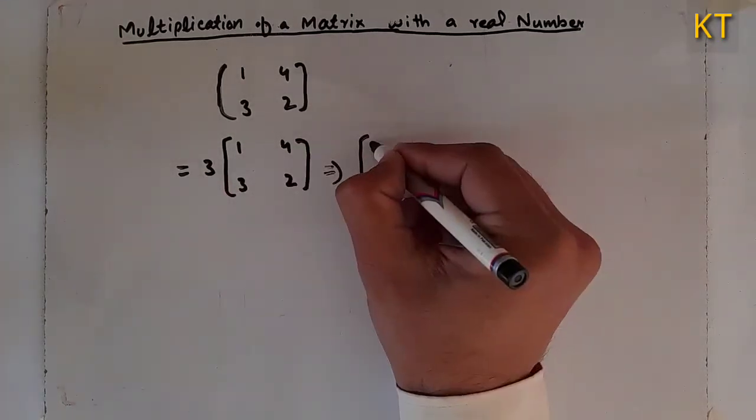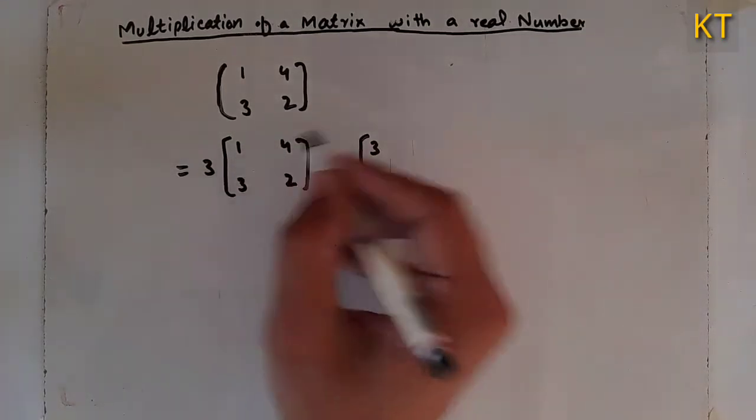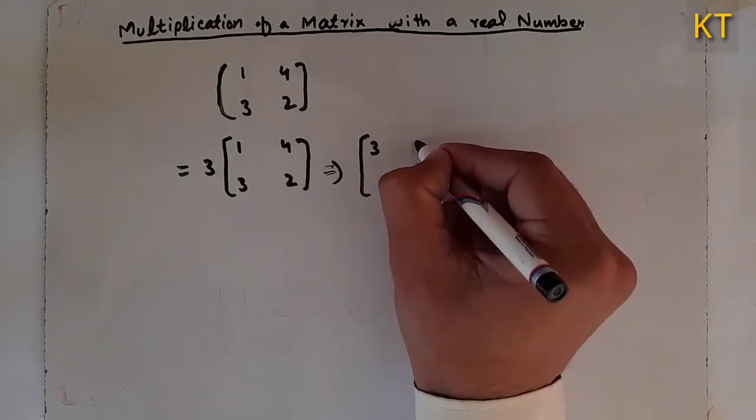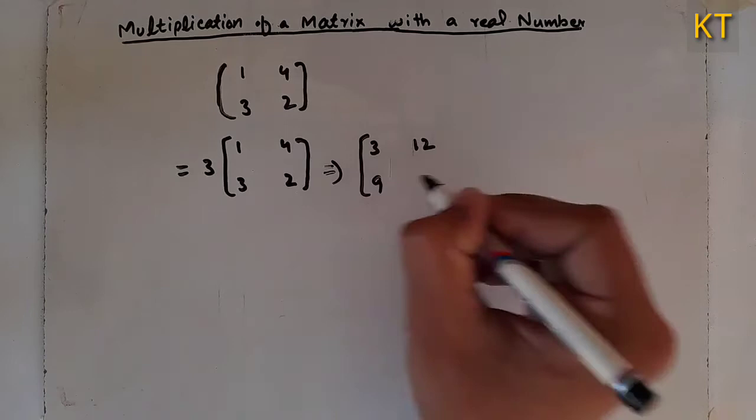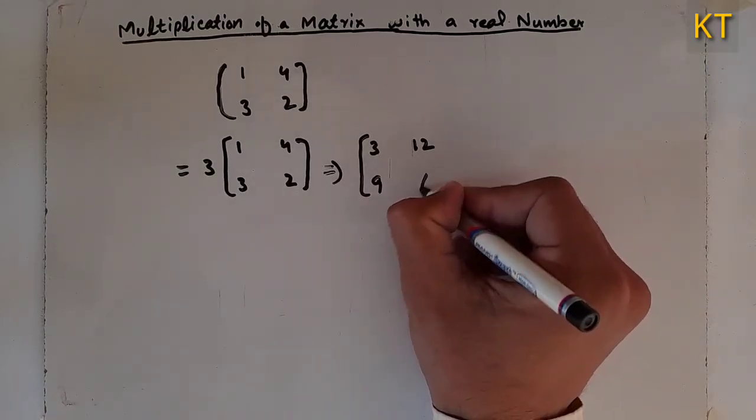Three into one is three. Three into four, three fours are twelve. Three threes are nine. Three twos are six.